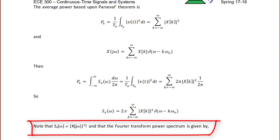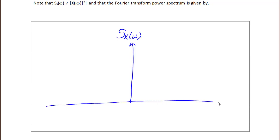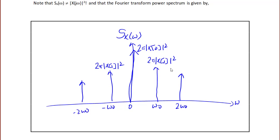The Fourier transform power spectrum S_x(ω) has S_x(ω) on the vertical axis and ω on the horizontal axis. It has even symmetry, but now these are weighted impulses rather than stems. The impulse at zero has weight 2π|x[0]|². At ±ω₀, the impulses have weight 2π|x[1]|². At ±2ω₀, the impulses have weight 2π|x[2]|², and so on.